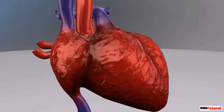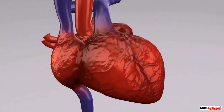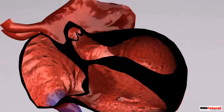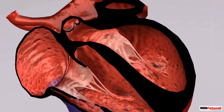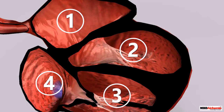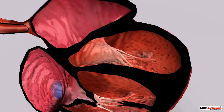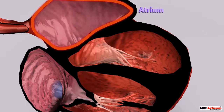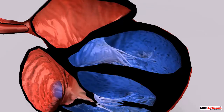Let us now go inside the heart and have a closer look at its internal structure. The heart is made of four chambers. The upper chambers of the heart have thin walls and are called the atria.